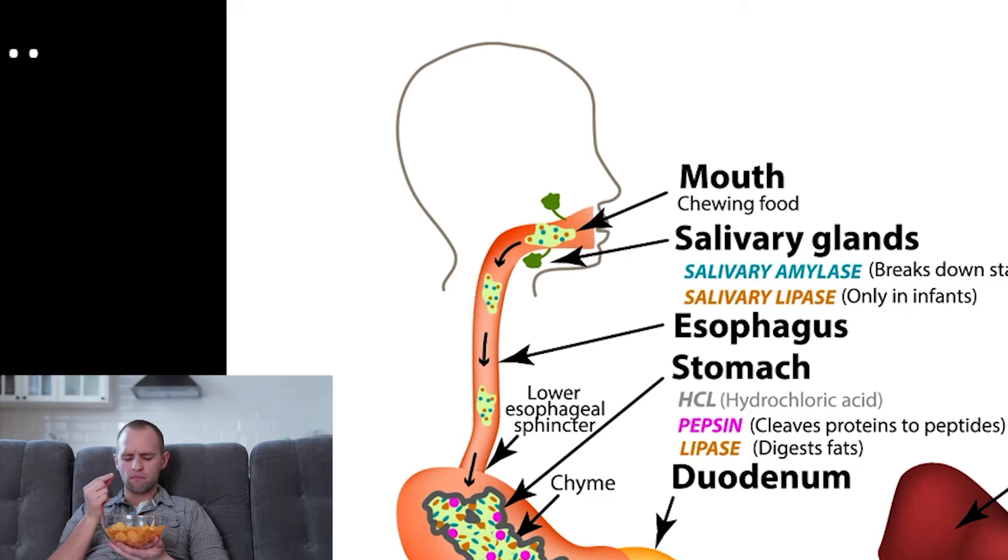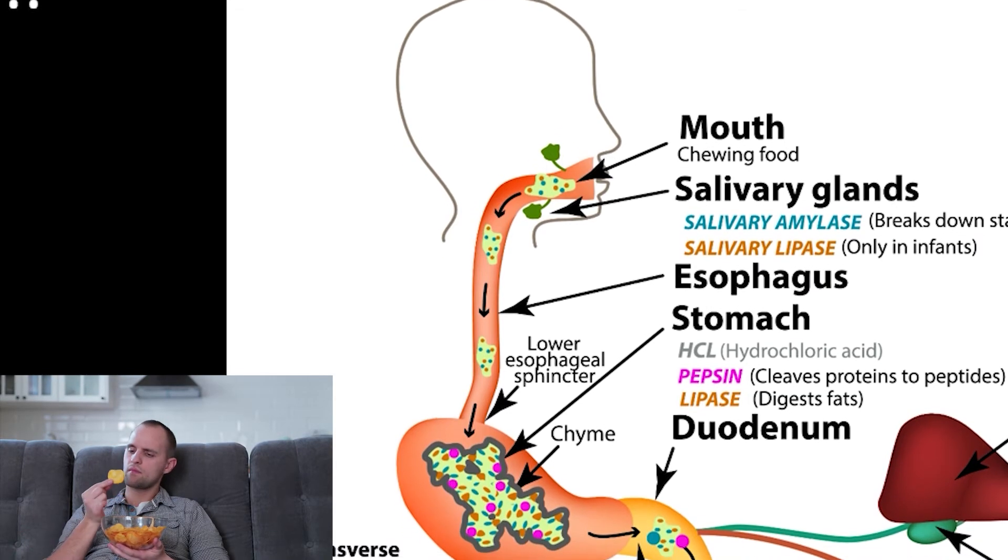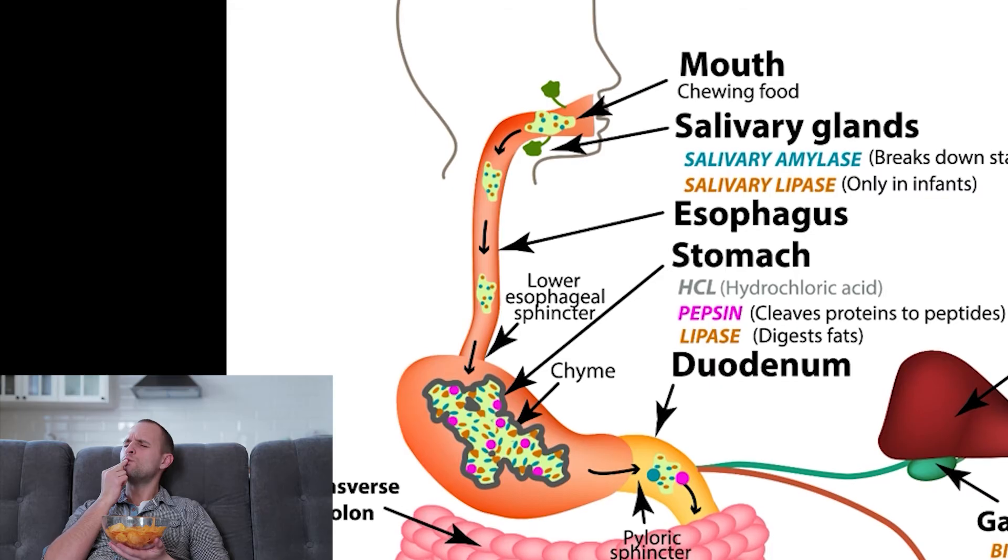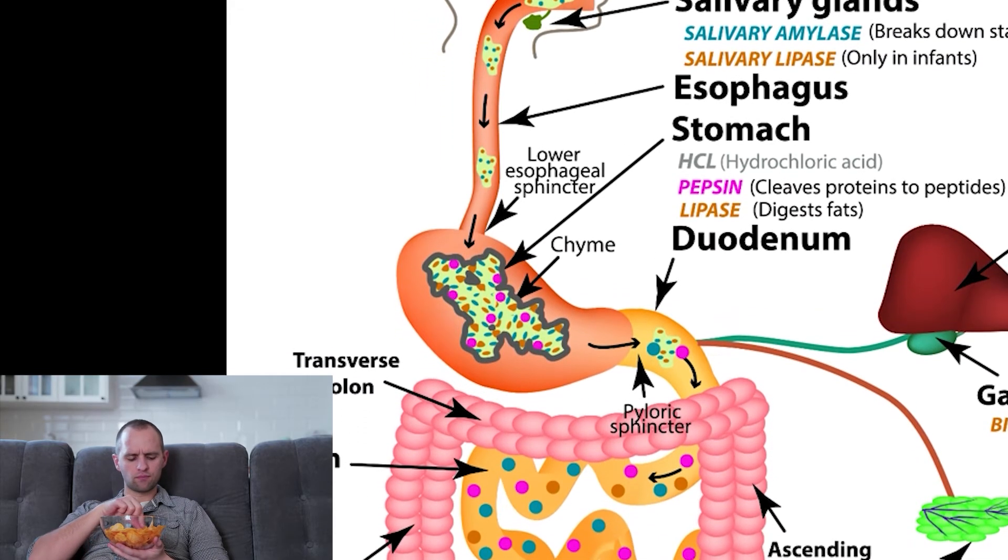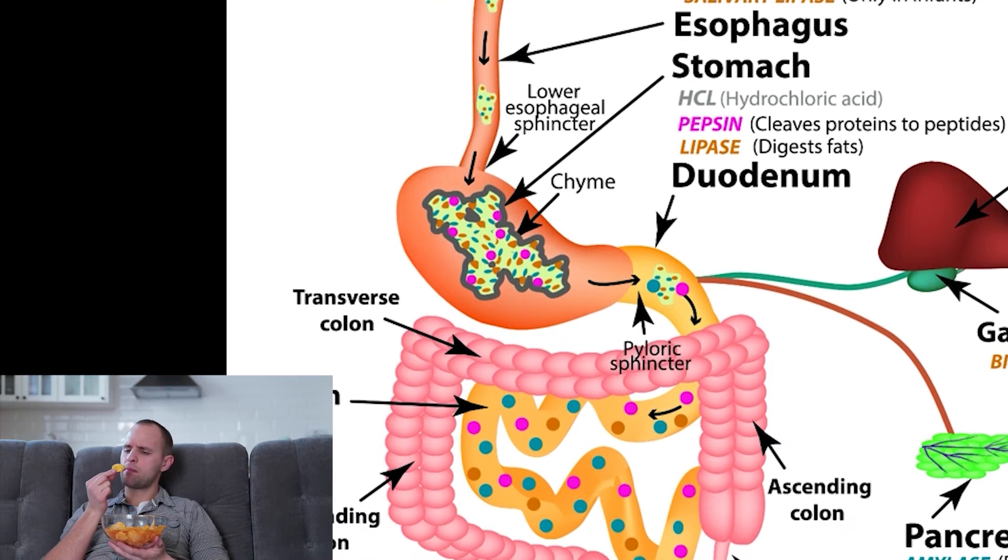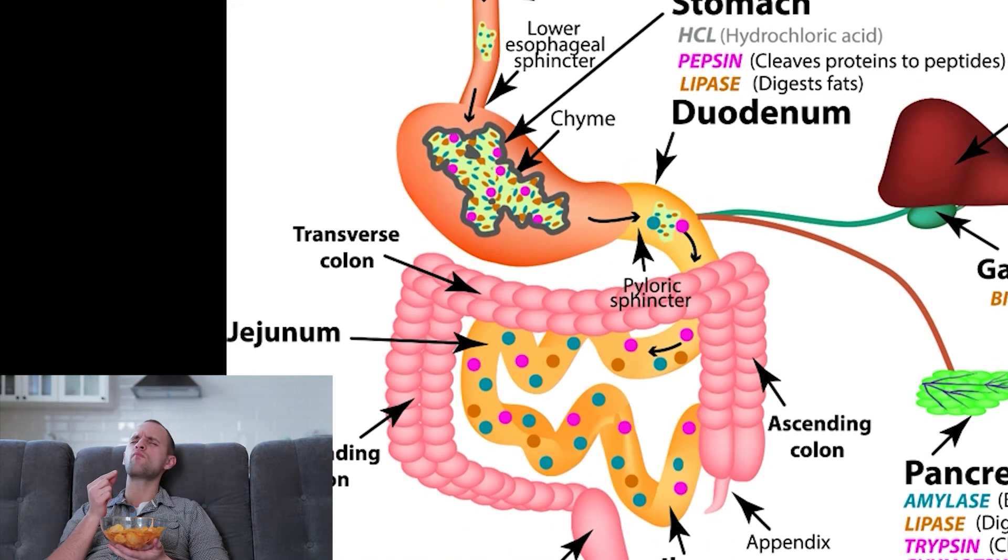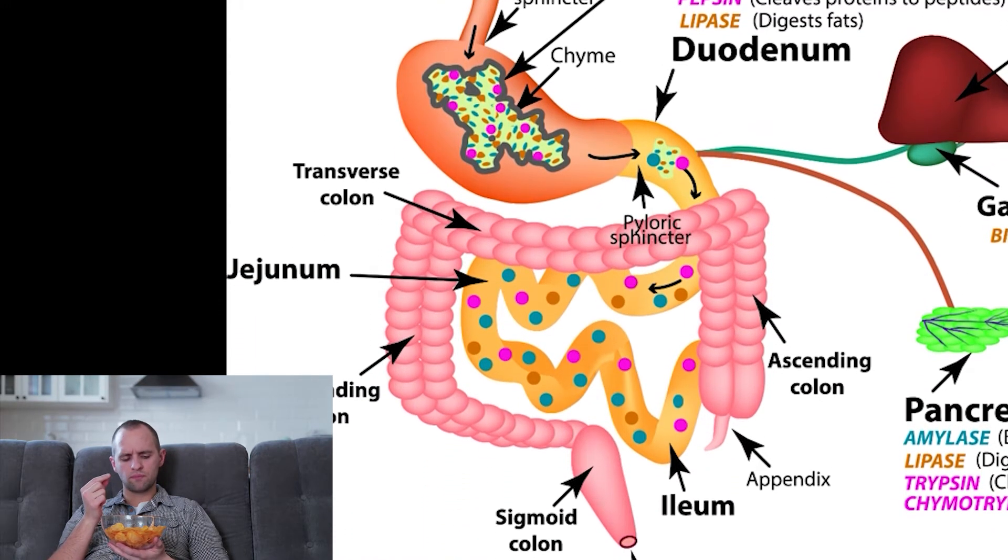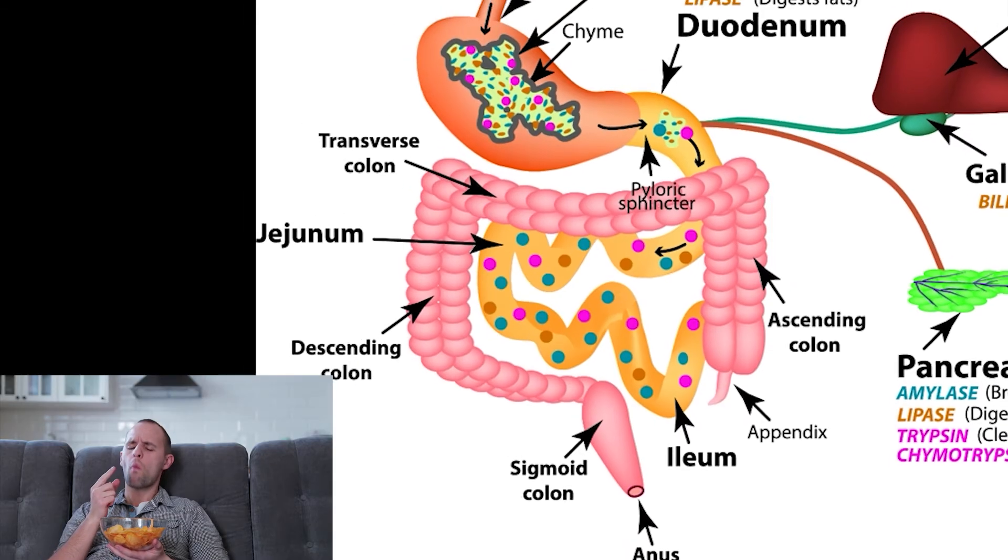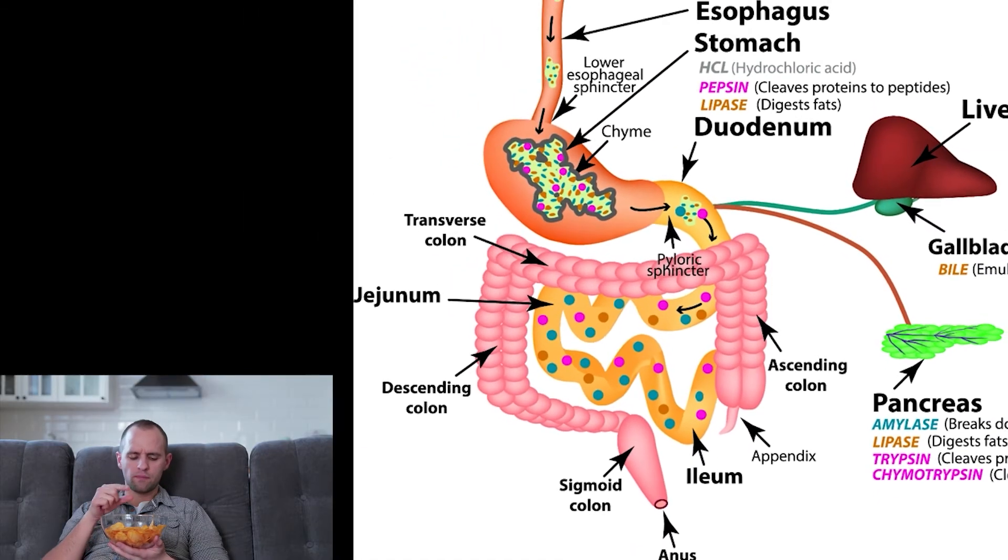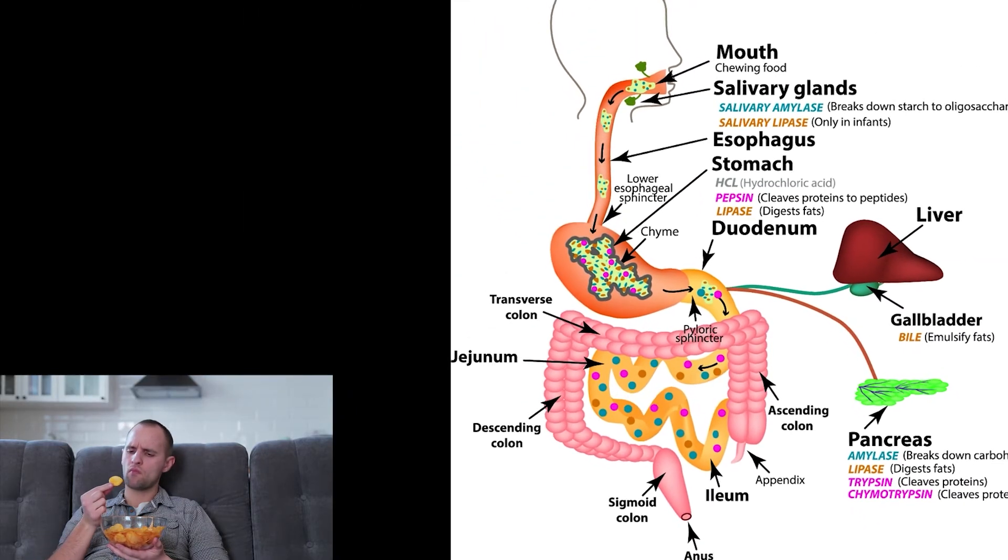In your mouth, amylase starts to break down these large polymers. In your stomach, acids are added to the mix to speed up the process. Between the acids and the amylase, many hydration reactions quickly break the starch down into individual molecules of glucose. These molecules of glucose are absorbed by the small intestine and sent to your cells, which can then use them for energy. Every other substance in food is digested in a similar way, just with different enzymes.